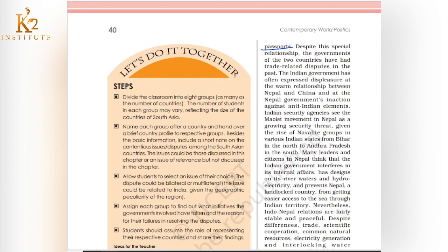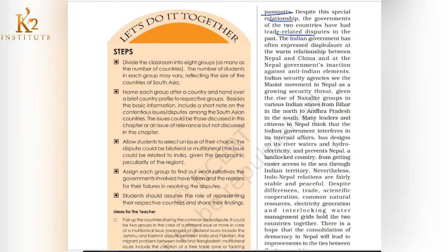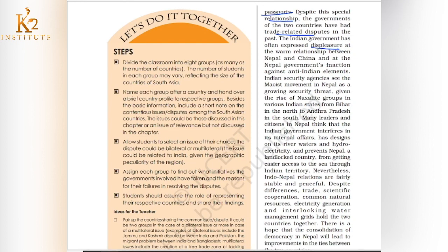Despite this special relationship, India and Nepal have had trade-related disputes. The Indian government has sometimes expressed displeasure with Nepal. We also know China is considered an enemy of India because China has illegally occupied Indian territory. While India maintains friendly relations with Nepal, Nepal has also been making good relations with China, and the Nepal government has also been seen as harboring anti-Indian elements.